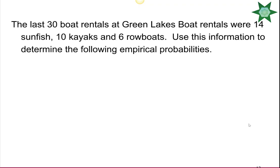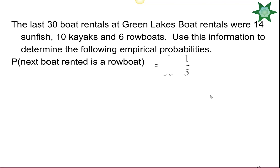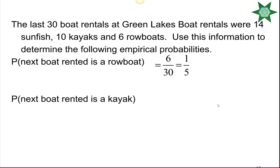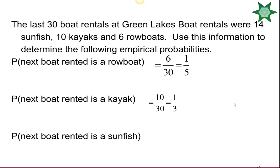The last 30 boat rentals at Green Lake were 14 sunfish, 10 kayaks, and 6 rowboats. The probability the next boat rented is a rowboat is 6 over 30, which simplifies to 1/5. The probability it's a kayak is 10 over 30, or 1/3. The probability it's a sunfish is 14 over 30, which simplifies to 7 out of 15.